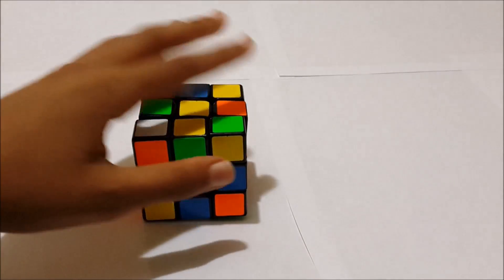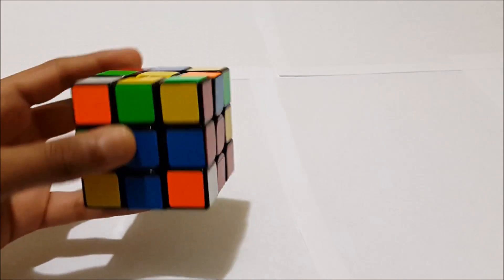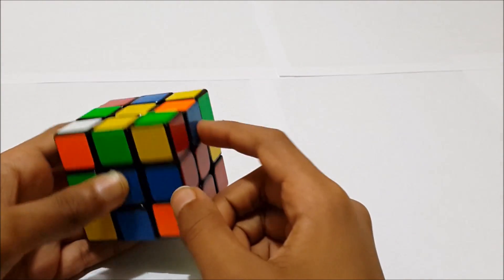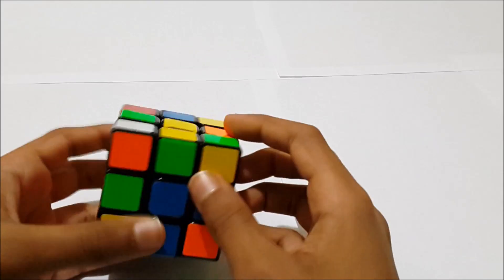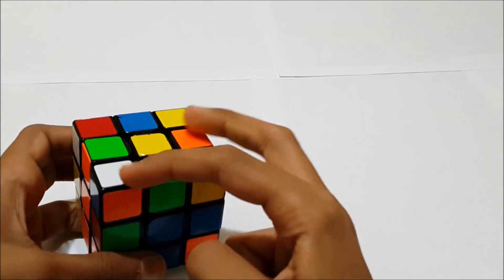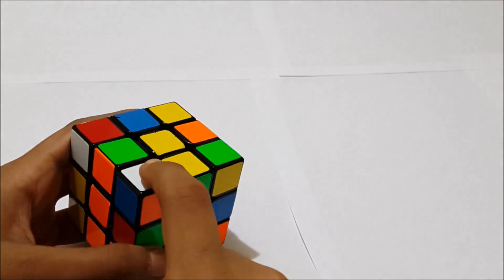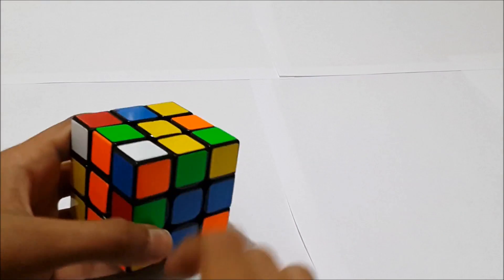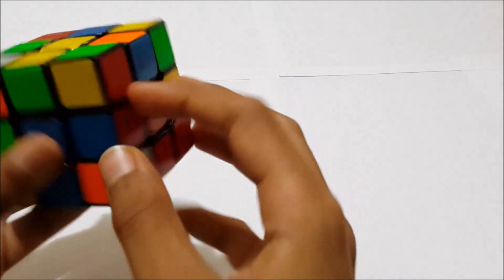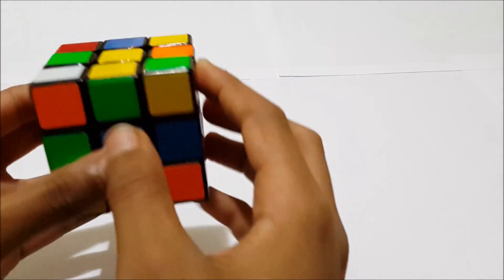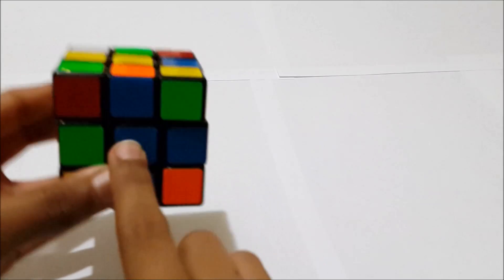Alright, so this last case here is quite simple. It's where we have an edge that's not solved yet and a corner, both on the top layer. Now, in this case, we have the corner with white or whatever bottom color you have facing up. So what we're going to do is line up this edge with this respective center, which is blue, so that it lines up like this.